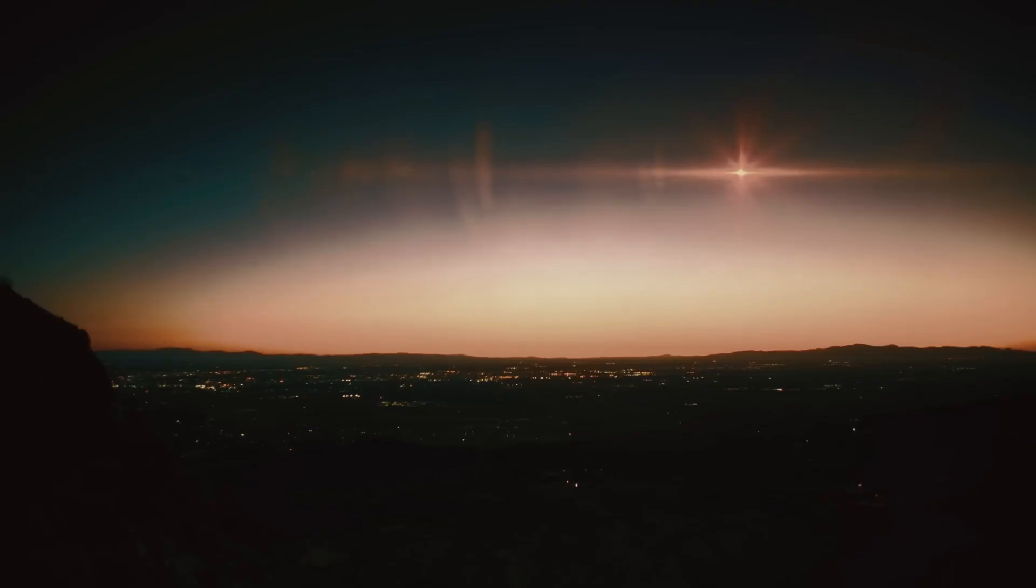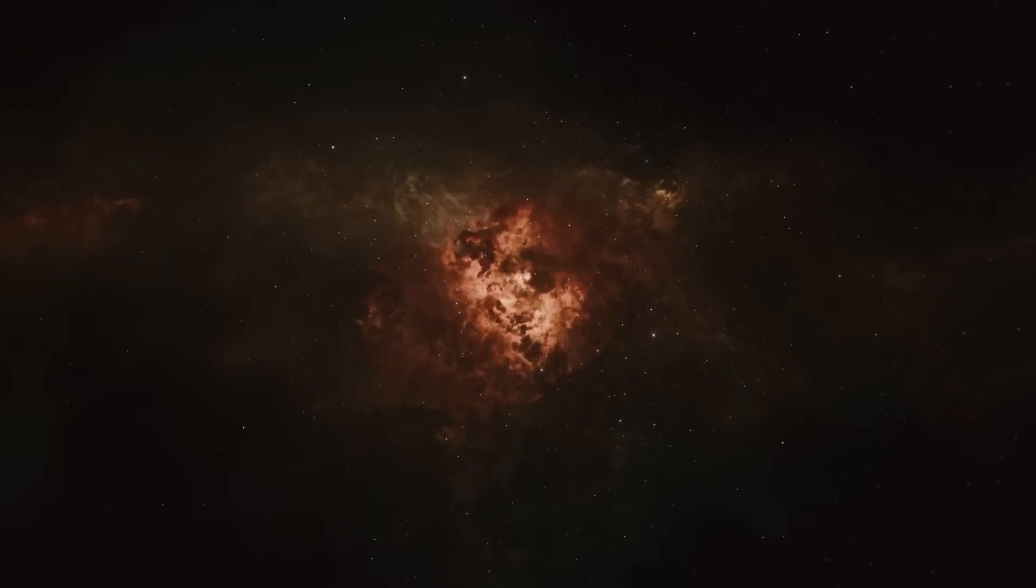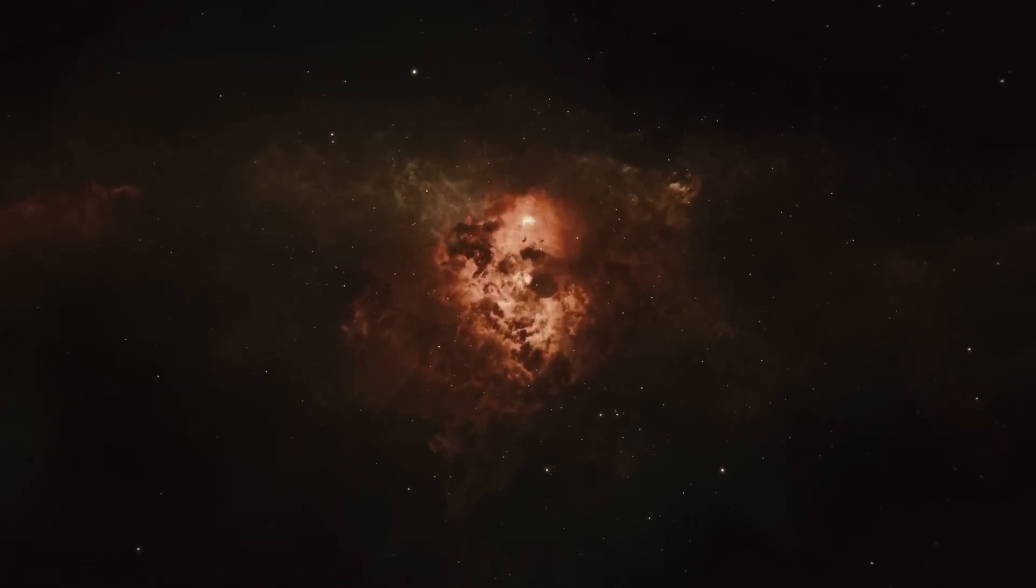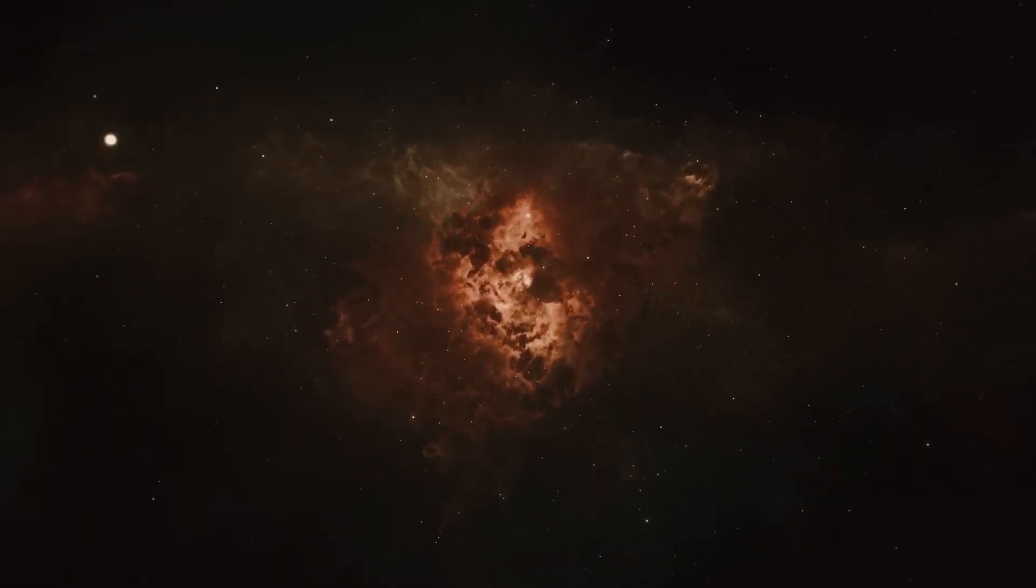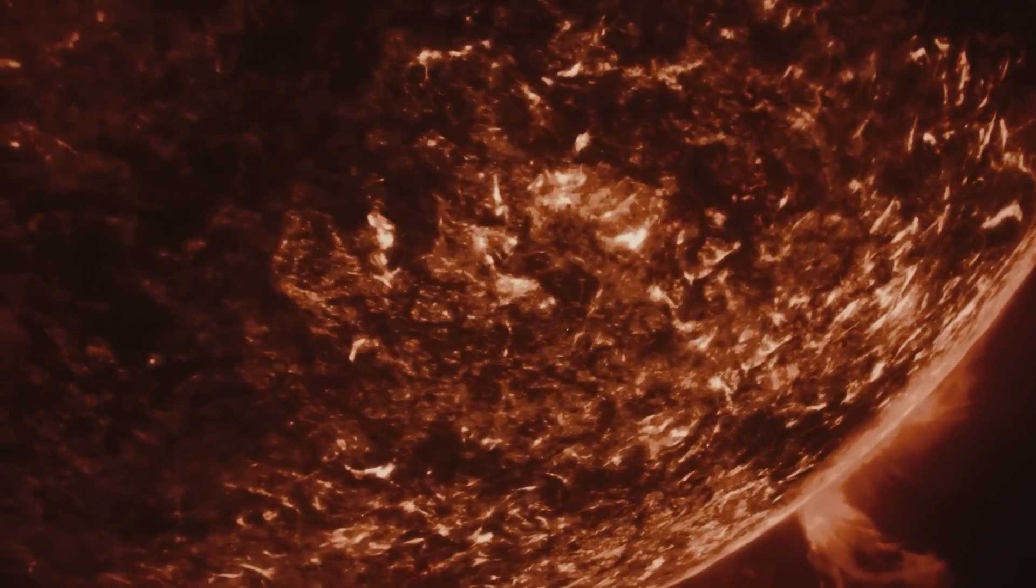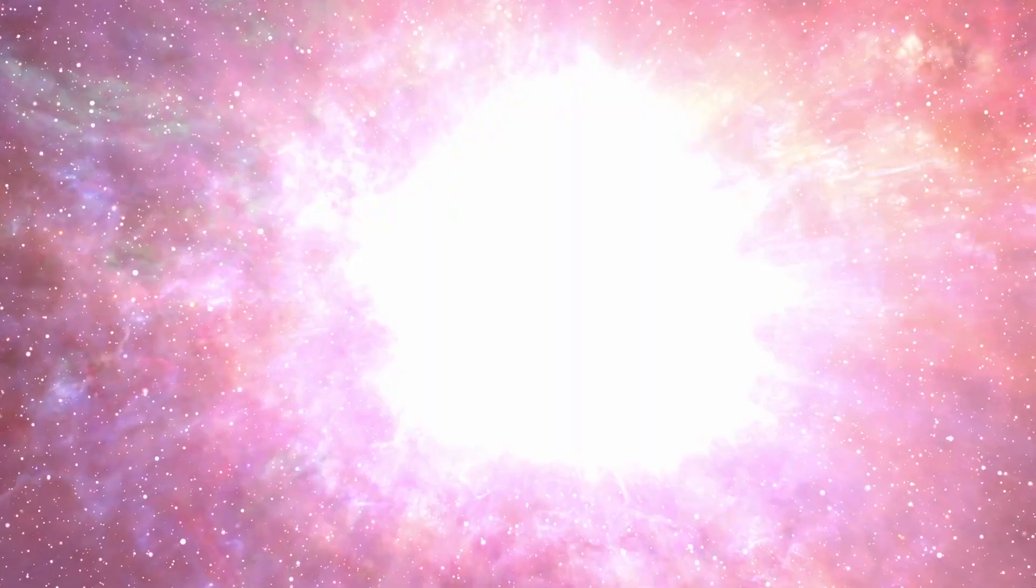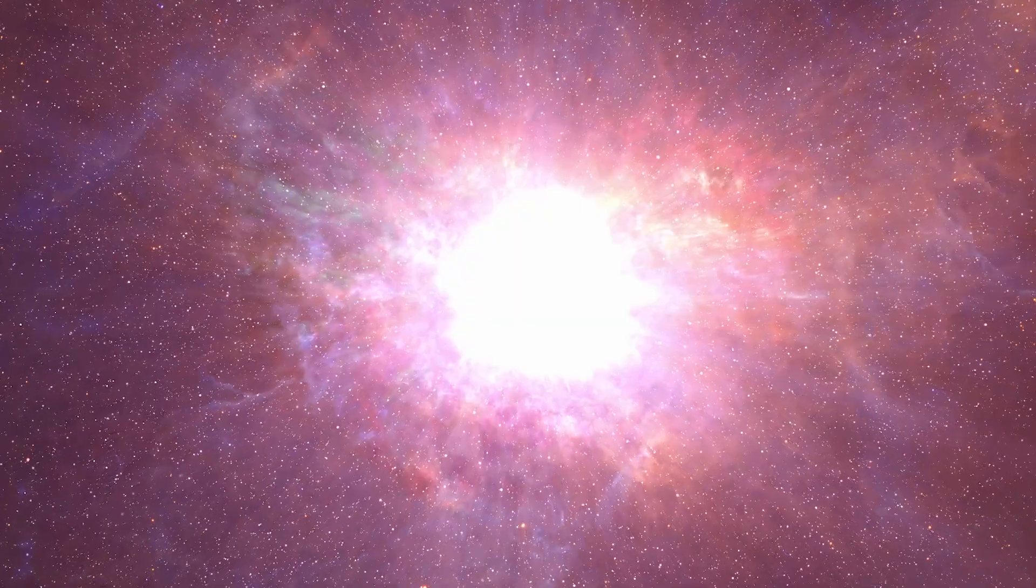However, there is insufficient evidence to say with certainty when this will occur. A supernova is an extremely bright explosion that occurs when a star reaches the end of its life. Although harmless to life on Earth and safe to observe with the naked eye from our planet, the brightness of a supernova depends on the size of the exploding star. Since Betelgeuse is a very large star, its supernova would be extremely bright, comparable to a crescent moon visible even during the day.